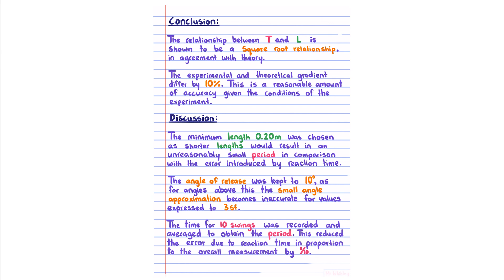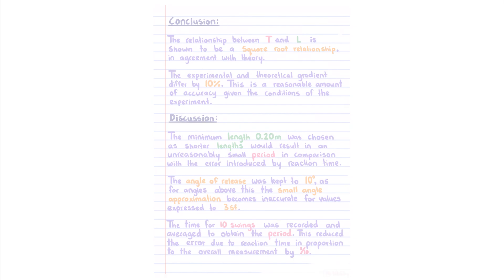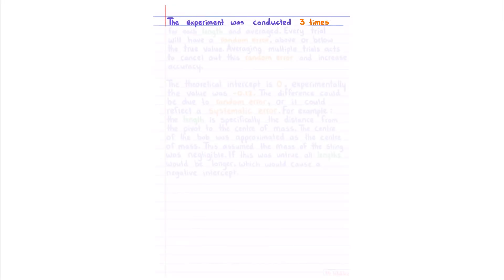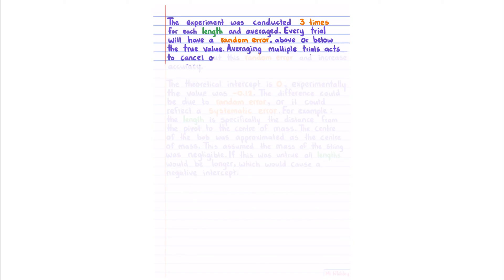The experiment was conducted three times for each length and averaged. Every trial will have a random error above or below the true value. And so averaging multiple trials acts to cancel out this random error and increase accuracy. This is a general statement that will pretty much fit any of these assessments.